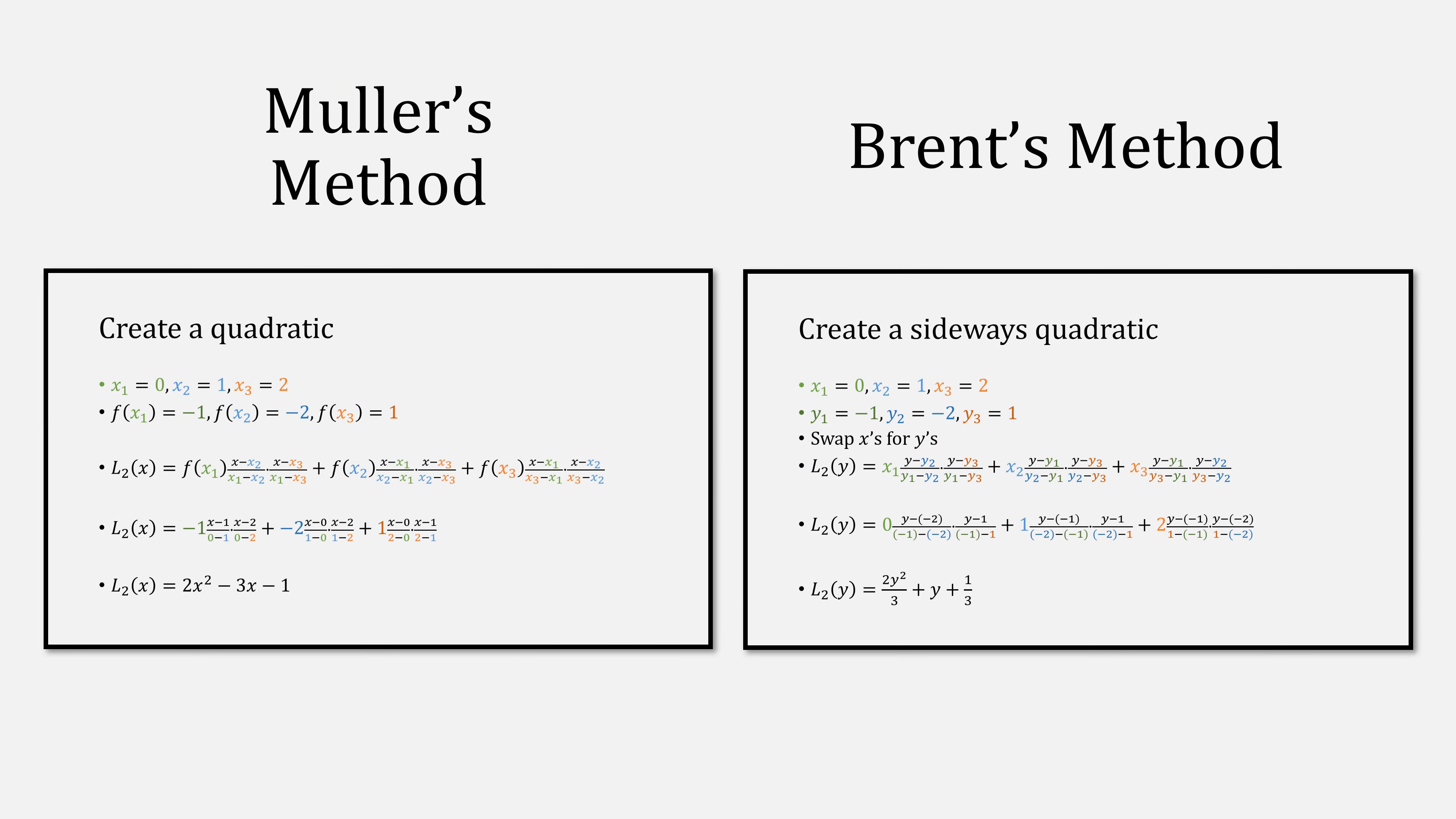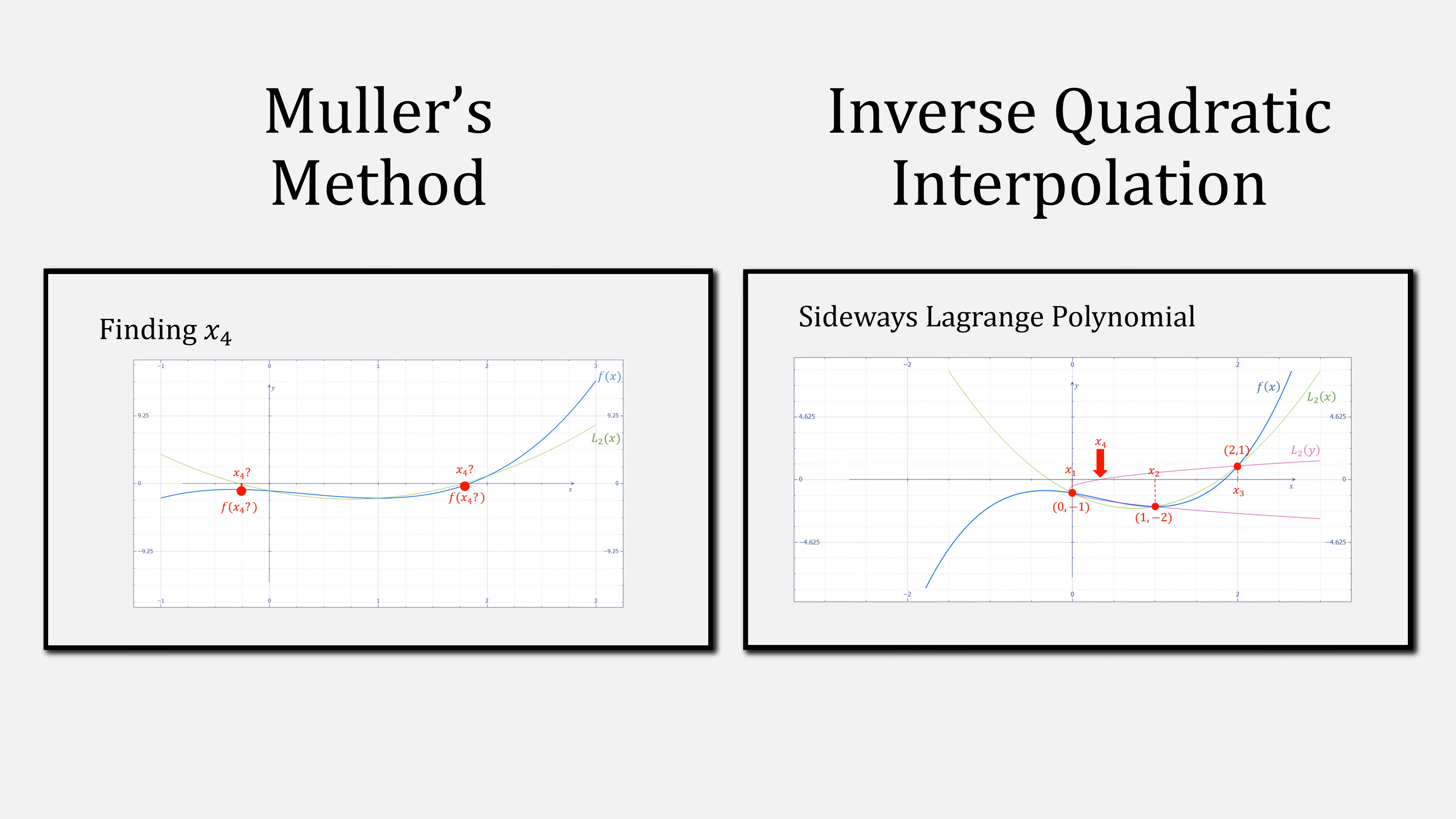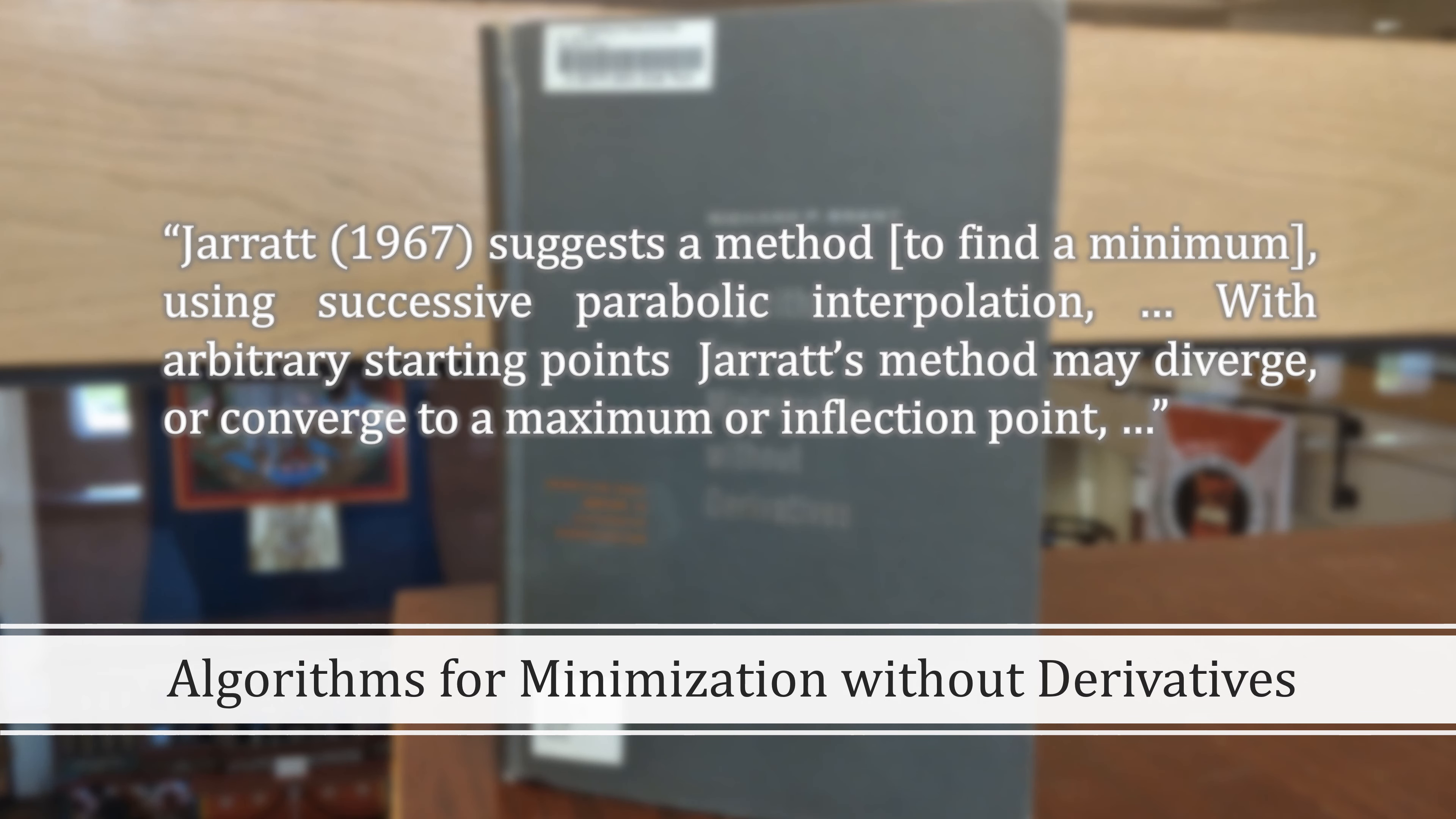And for examples of using interpolation to find roots, check out my videos on inverse quadratic interpolation and Mahler's method. Let us again turn back to Algorithms for Minimization Without Derivatives by Richard Brent. In it, he writes, Jarratt suggests a method to find a minimum using successive parabolic interpolation. With arbitrary starting points, Jarratt's method may diverge or converge to a maximum or inflection point.